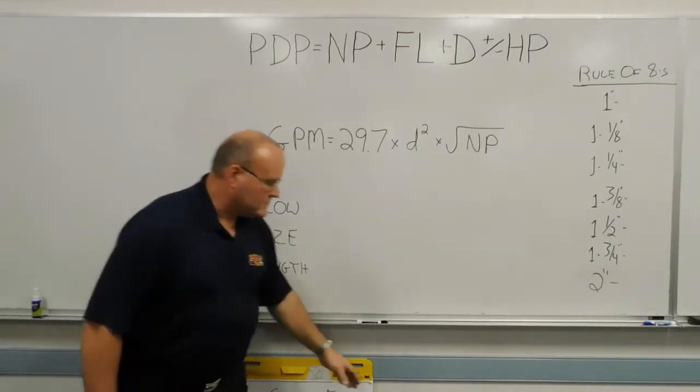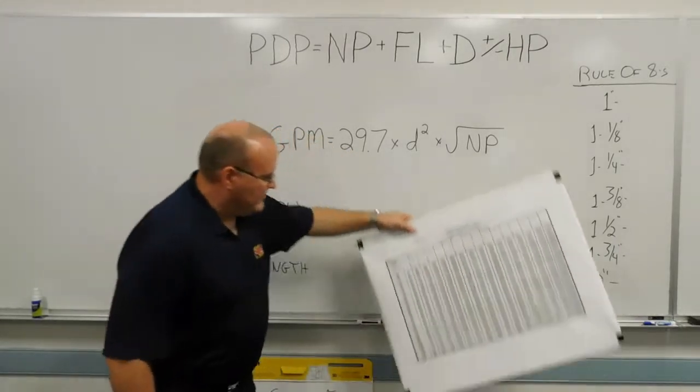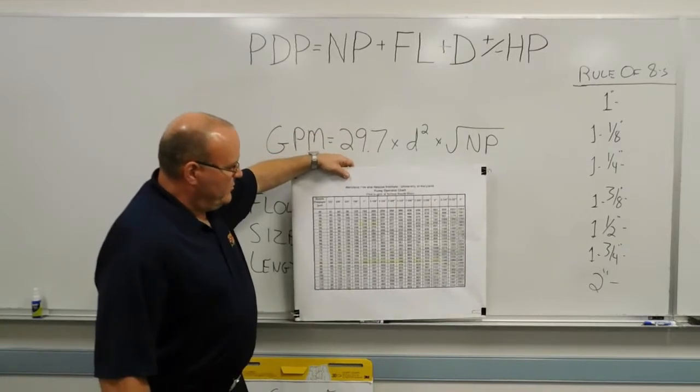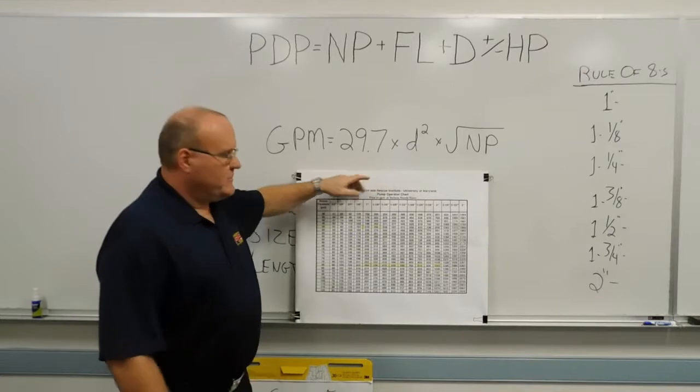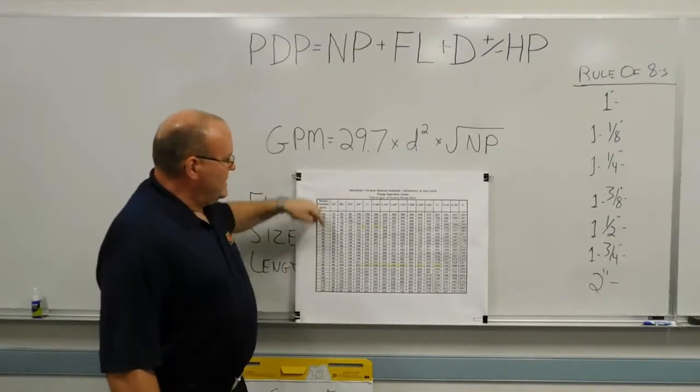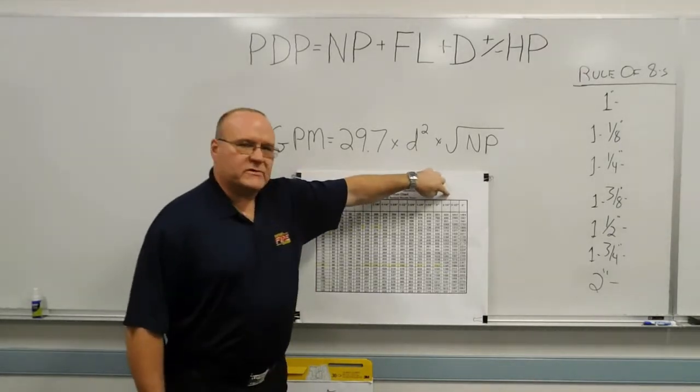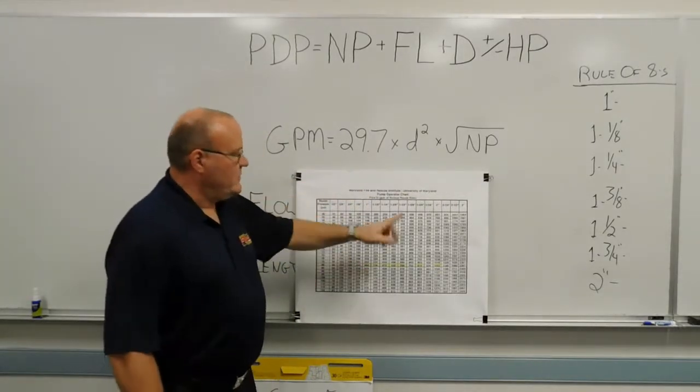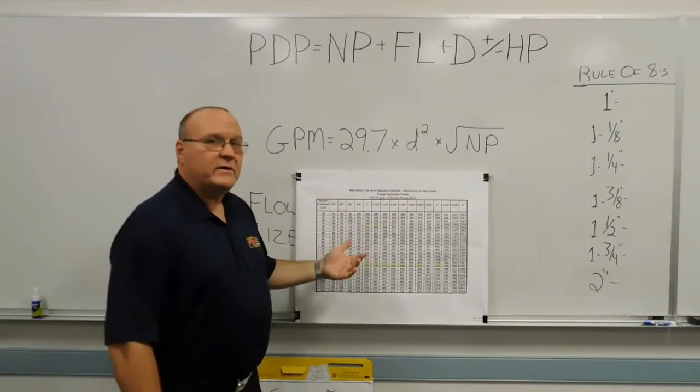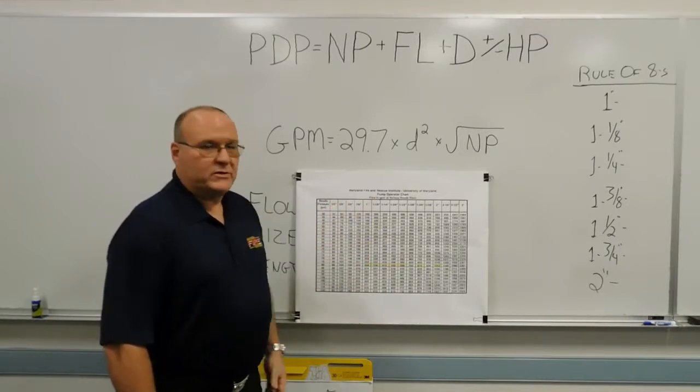However, thankfully, that stuff has been calculated for us already and put in the form of a pumps chart. So for our solid stream nozzles, nozzle pressure down the side, tip sizes across for your solid stream opening, and then find the tube and you can come up with the flow that you're pushing on the fire ground.